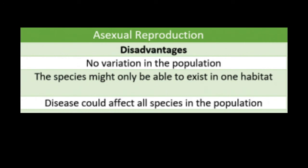However, there are disadvantages to asexual reproduction, mostly stemming from the lack of genetic variation in the population. When all members in a population are clones of each other, that results in a lack of what is called genetic variation — meaning there is no variety in the genes in the population. This can reduce a species' ability to survive in a variety of different habitats. That species will be very good at surviving in the particular habitat for which its genes make it successful, but if the habitat changes or if members of that species move elsewhere, those genes might not make them successful in a different place.